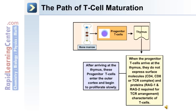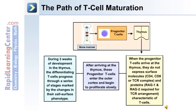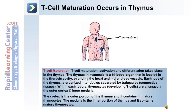After arriving at the thymus, progenitor T cells enter the outer cortex and begin to proliferate slowly. During three weeks of development in the thymus, the differentiating T cells progress through a series of stages marked by changes in their cell surface phenotype. The thymus is a bi-lobed organ located in the thoracic cavity overlying the heart and major blood vessels. Each lobe is organized into lobules separated by trabeculae, which are connective tissues. Within each lobule, thymocytes — developing T cells — are arranged in the outer cortex and the inner medulla. The cortex contains immature thymocytes, while the medulla contains mature thymocytes.